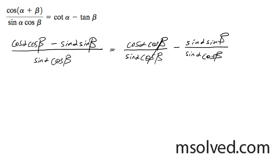So what happens here is these cosine betas cancel out and these sine alphas cancel out. So what you have over here is you've got the cotangent of alpha. This is cotangent of alpha minus, and over here we've got sine over cosine, which is the tangent of beta.